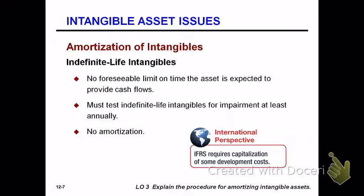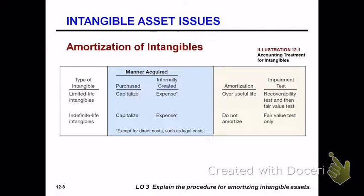If an intangible has an indefinite life, there's no amortization, because we don't know when it will no longer have any value. You do have to test it for impairment at least annually. This overall chart summarizes the different rules for purchased versus internally created intangibles — amortization and when impairment testing is required.